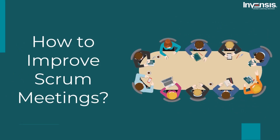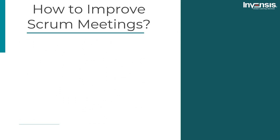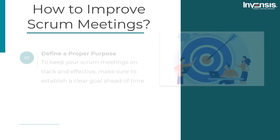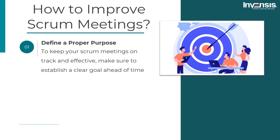Let us discuss some ways to improve Scrum meetings. In order to improve the efficiency of these Scrum meetings, certain steps and practices are followed. First, define a proper purpose. If you want to keep your Scrum meetings on track and effective, make sure to establish a clear goal ahead of time. Before everyone attends the meeting, describe the sort of Scrum meeting that will take place, the attendees of the meeting, and how long it will last.